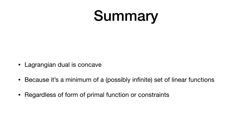To summarize: the point of this video is to show that a Lagrangian dual is concave for any minimization task. That's because it's a minimum of a possibly infinite set of linear functions. This is true regardless of the form of the primal function or constraints — it could be non-convex, discrete, or discontinuous. It remains an open question how powerful this concavity actually is and what we can do with it.